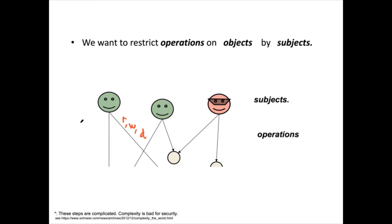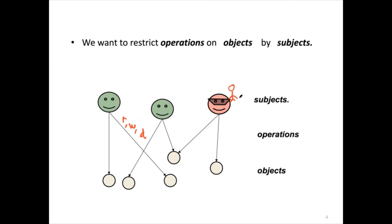There are also non-computer system examples — for example, in buildings. The subjects are attendants in the building, and the building has many rooms. We don't want to allow any person to freely enter any room; we want to have some restrictions.